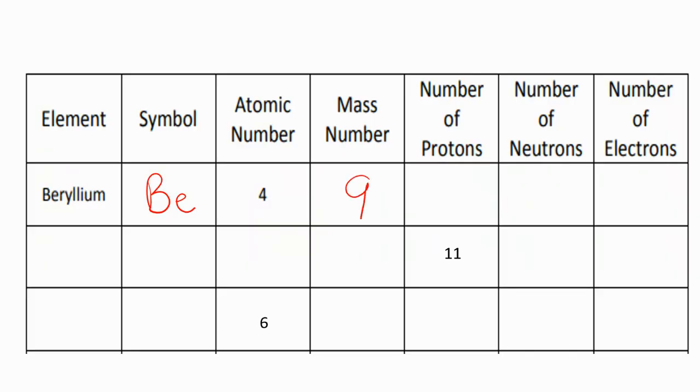So my mass number is 9. The number of protons is based on the atomic number, and that's 4. The number of neutrons I would figure out by saying 9 minus 4 is going to be 5. And I know that in order for an atom of an element to be on the periodic table, the charge has to be 0. So the protons have to equal the electrons, meaning that I should have 4 electrons.